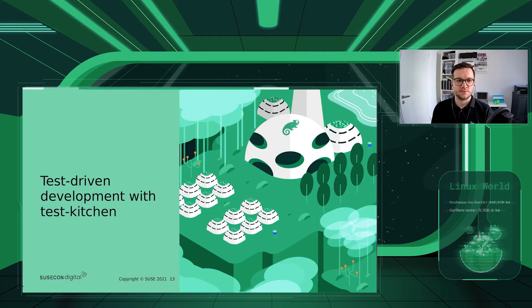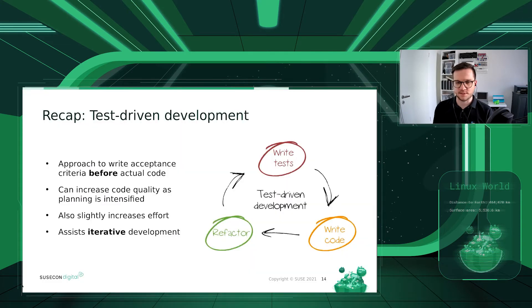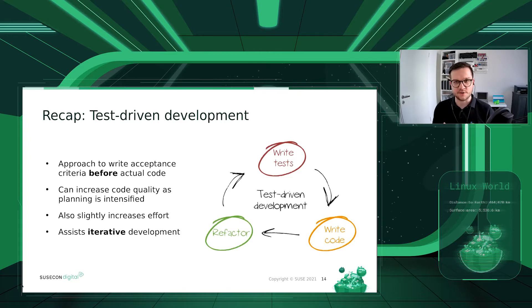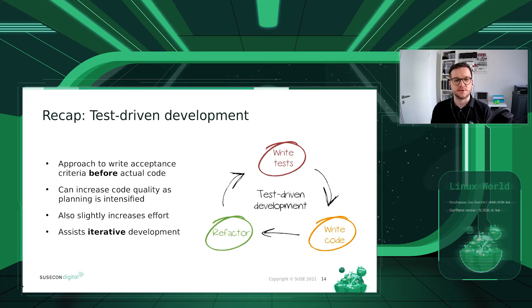Let's have a look at test-driven development with Test Kitchen. Basically, TDD is an approach to write acceptance criteria before writing the actual code. This can increase code quality because your planning is intensified — you don't start writing code and afterwards think about how to do it nicely. You sit down, think about what you want to achieve, how to get there, and which acceptance criteria is important to your use case. It slightly increases effort but is totally worth it as it assists iterative development.